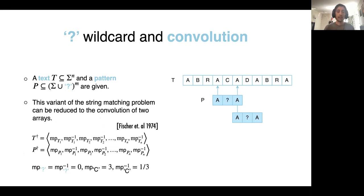in 1974 showed that this problem of string matching with question mark wildcard characters can be reduced to convolution. To do that, they defined these MP variables that for every non-wildcard character, it's the ordinal number of the character, and for a wildcard character, it's equal to zero.